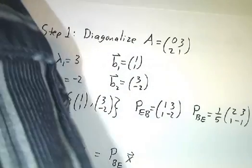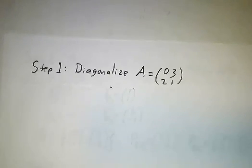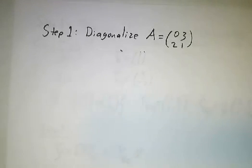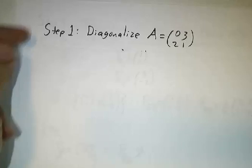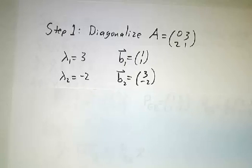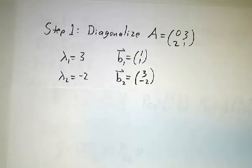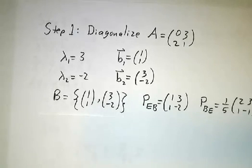Step one doesn't care about whether it's difference or differential — it's diagonalizing the matrix. The sum of the rows is 3, so 3 is an eigenvalue. The trace is 1, so negative 2 is the other eigenvalue. The eigenvectors are (1, 1) and (3, -2). So our basis is (1, 1) and (3, -2).